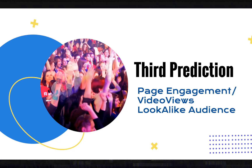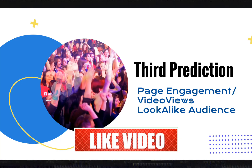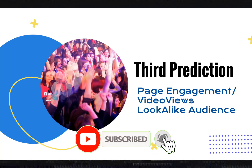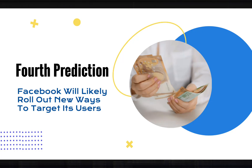I've tested this and am currently testing it — it is working just fine. That is the third prediction. The fourth prediction is this: given all the changes that happened on the Facebook Ads platform in 2021, Facebook will roll out new ways to target its users — probably new interests and other targeting options — so that advertisers can better reach their potential customers. These are just predictions; some will happen, some might not, and all might happen.